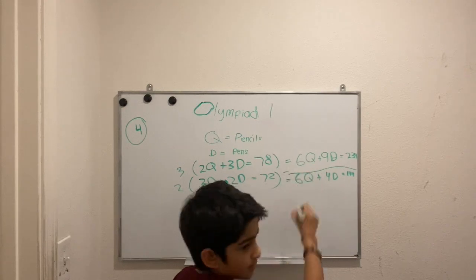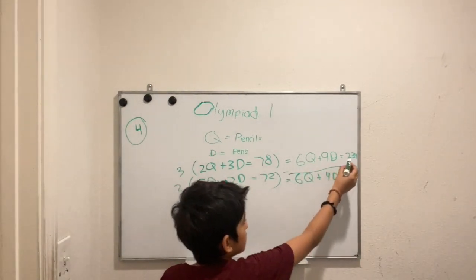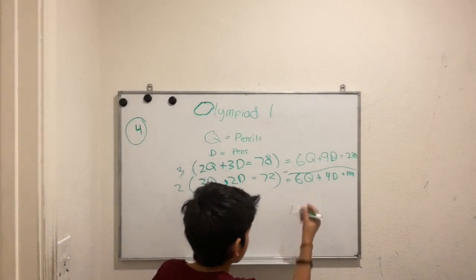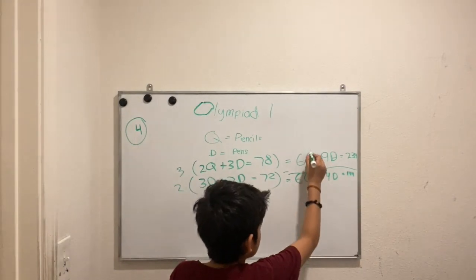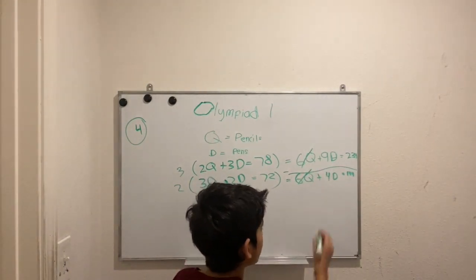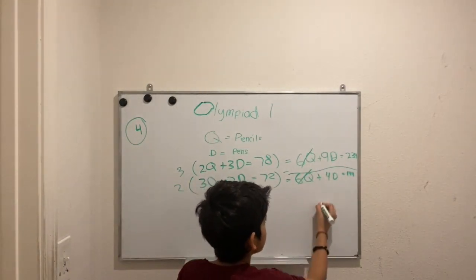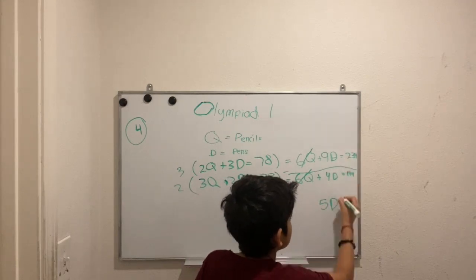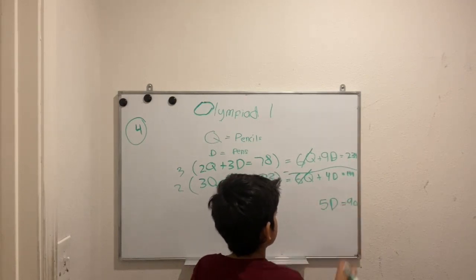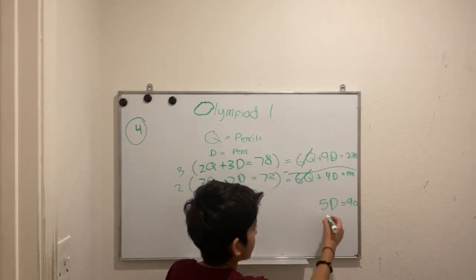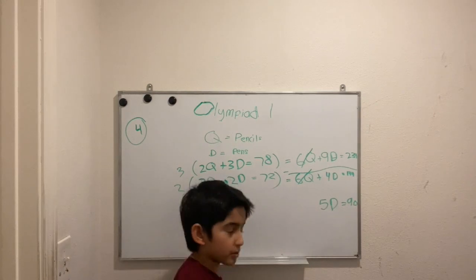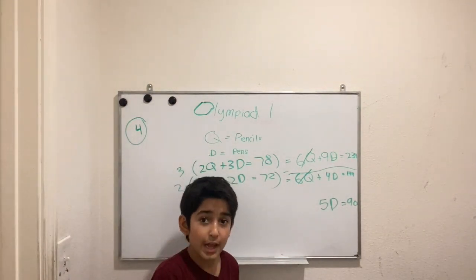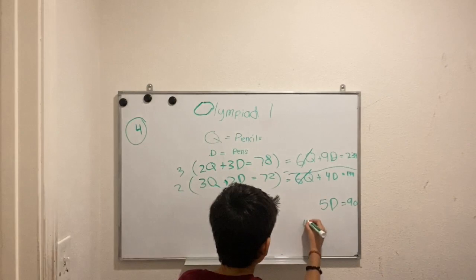Now we subtract the second equation from the first. The 6q terms cancel out, leaving 5d equals 90. Dividing 90 by 5 gives d equals 18, so each pen costs 18 cents.